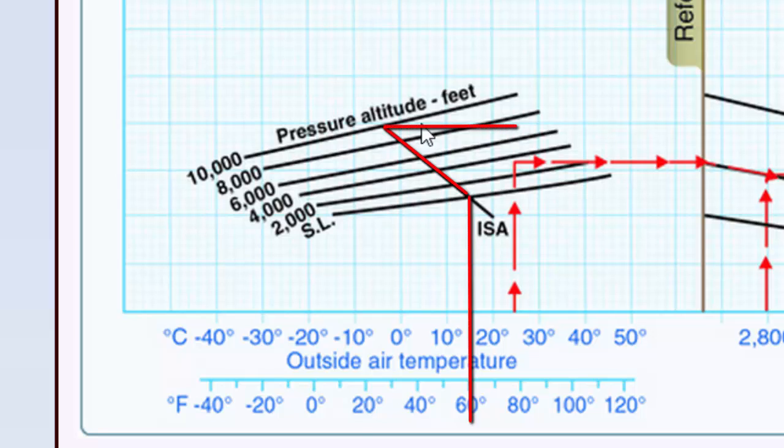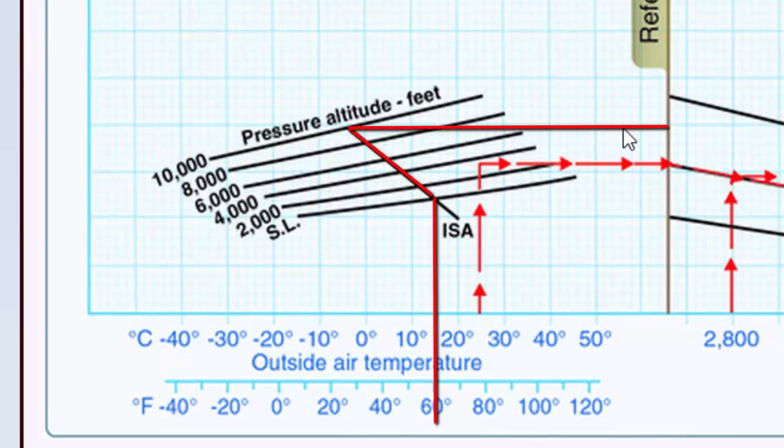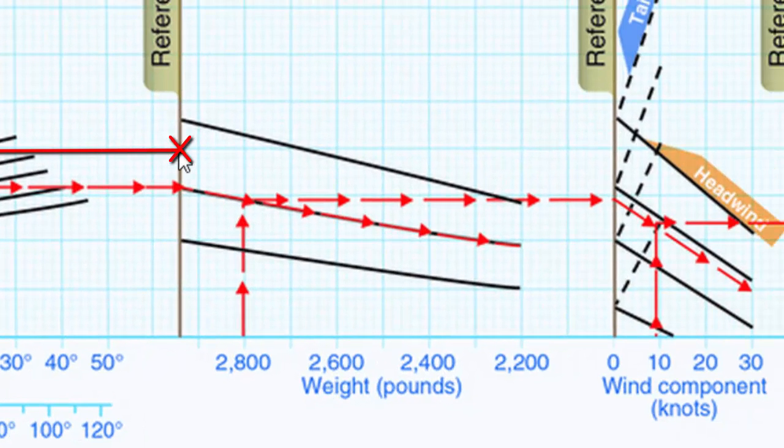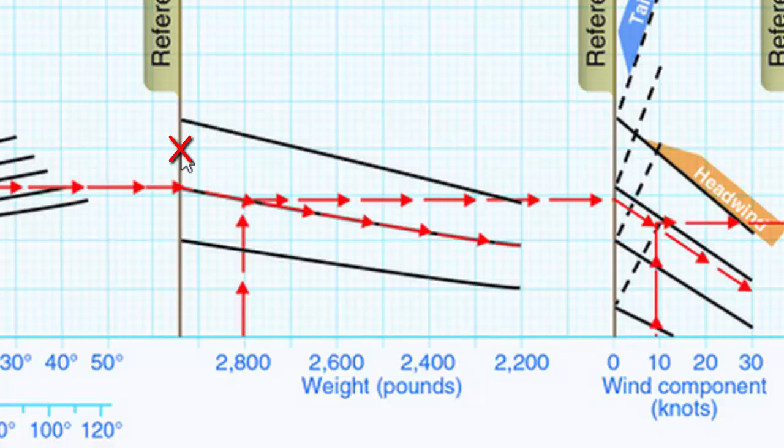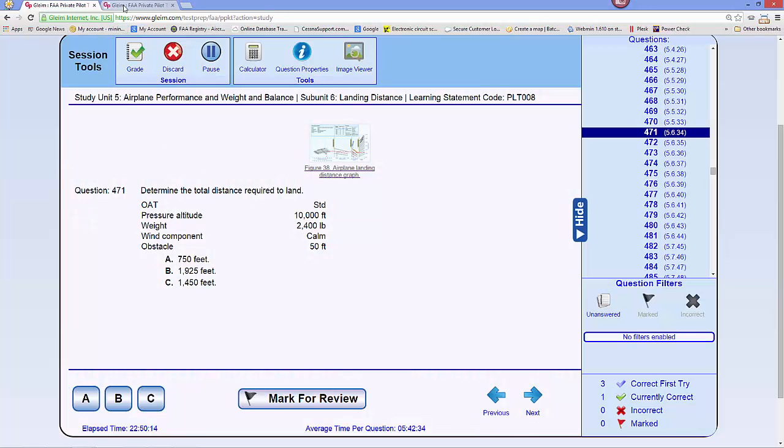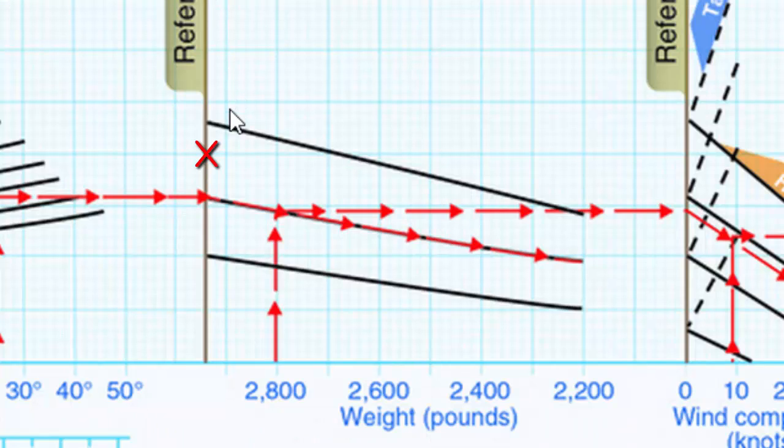We follow that line across and then parallel this next slope downward until we cross the weight. Our weight is 2,400 pounds, so we parallel these lines downward all the way until we get to 2,400 pounds.